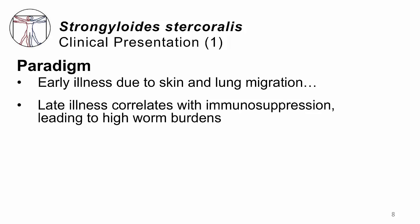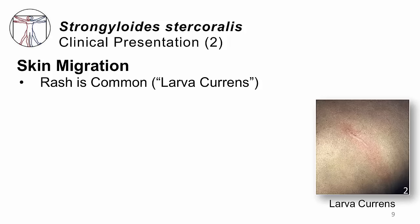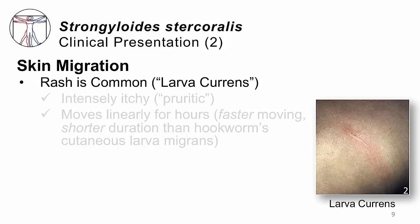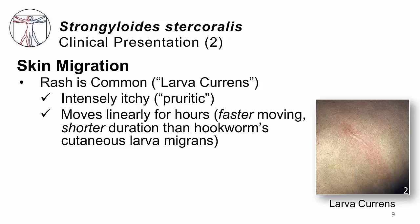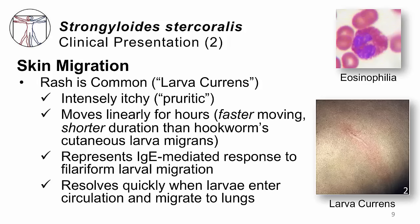How does this present clinically? The paradigm is that early illness happens when there is skin and lung migration, and later illness will correlate with the degree of immunosuppression — the more immunosuppressed, the higher the worm burden in the gut. So early on, we do have a rash called larva currans, quite reminiscent of cutaneous larva migrans, except that it's much more evanescent — a shorter-lived rash, intensely itchy, also mediated by IgE and histamine in the tissues. Unlike cutaneous larva migrans, this infection's rash only lasts for a short period of time, and once those larvae enter the circulation and migrate to the lungs, the rash tends to simmer down in a matter of hours or just a few days.